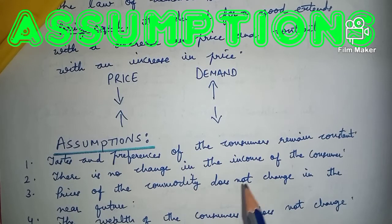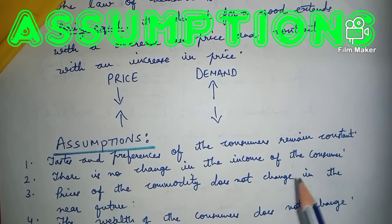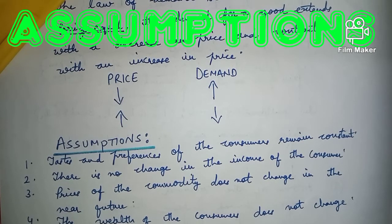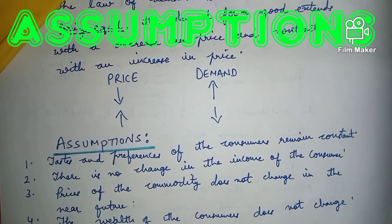Number two: there is no change in the income of the consumer. The consumer's income has to be constant. We are assuming that income is constant in the law of demand.